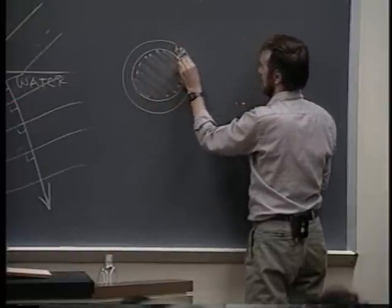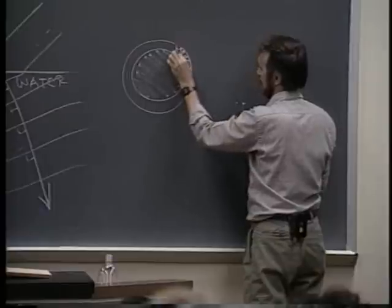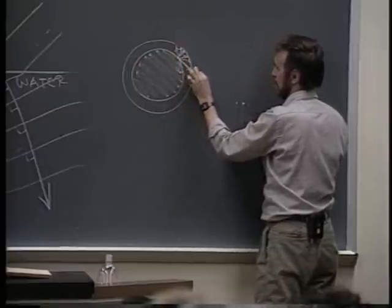And some of that light is coming like this, and some of that light's coming like that. And the light that's coming like this when it comes through, what's it do? Does it keep going straight?